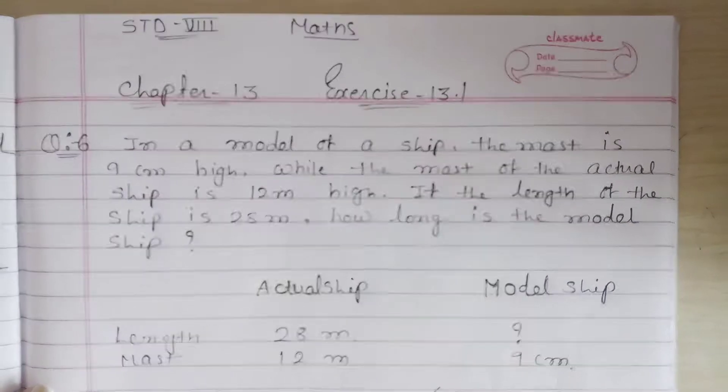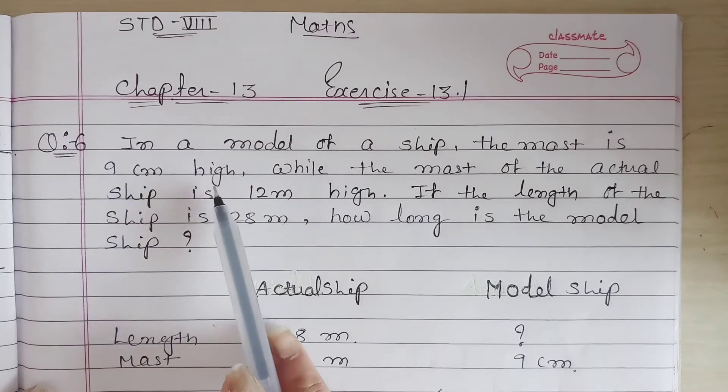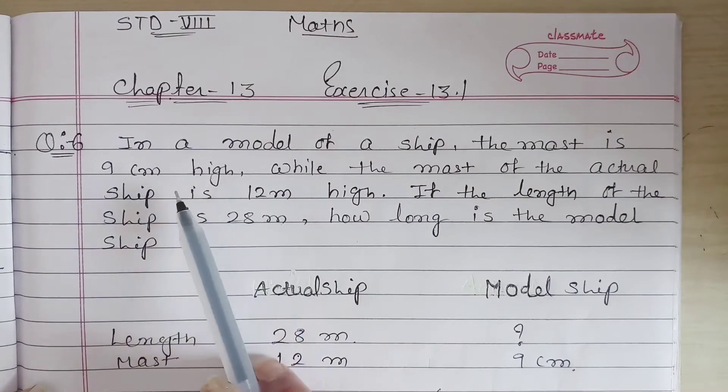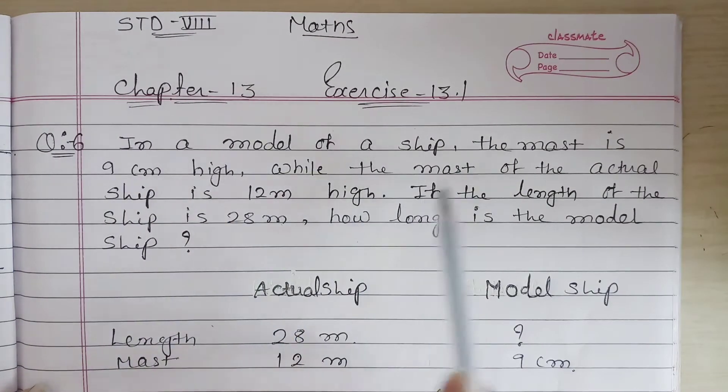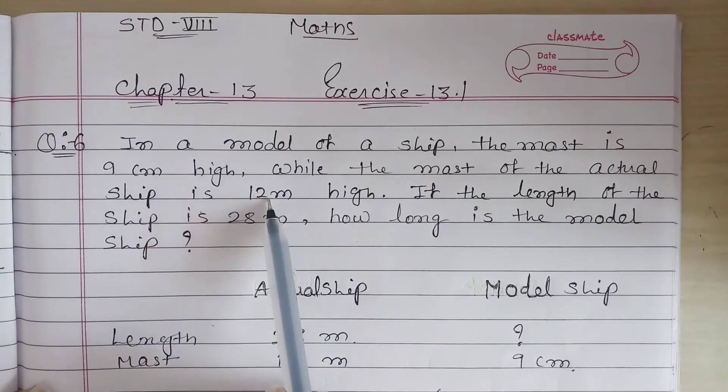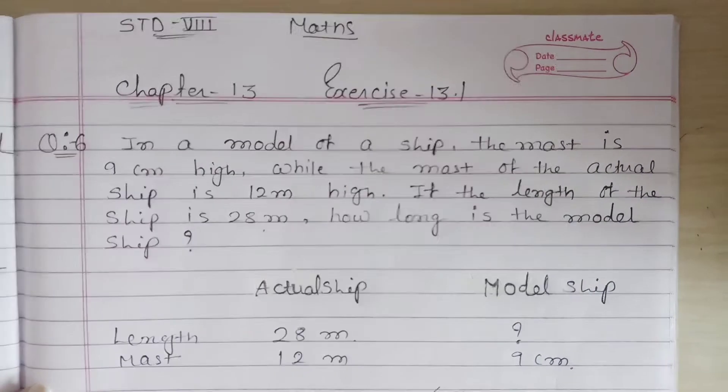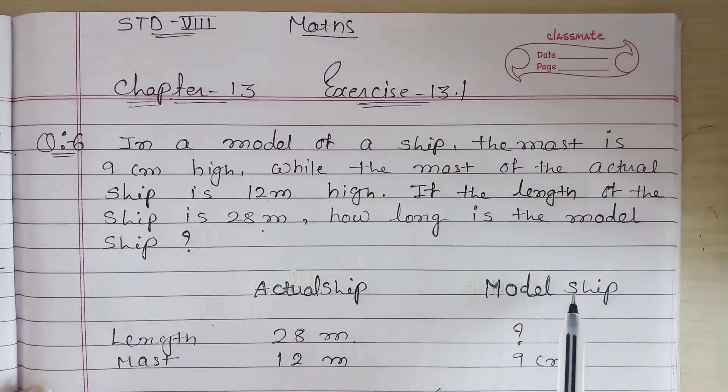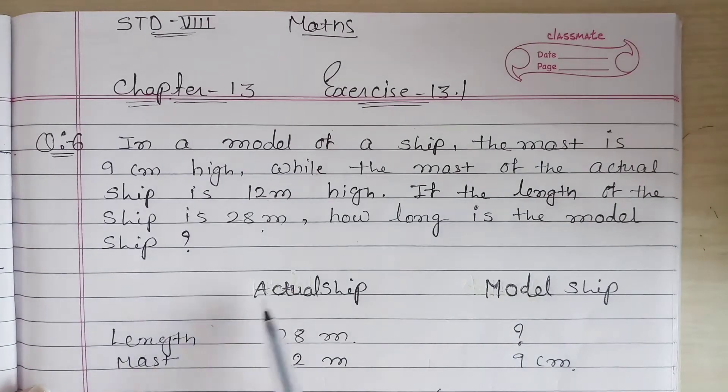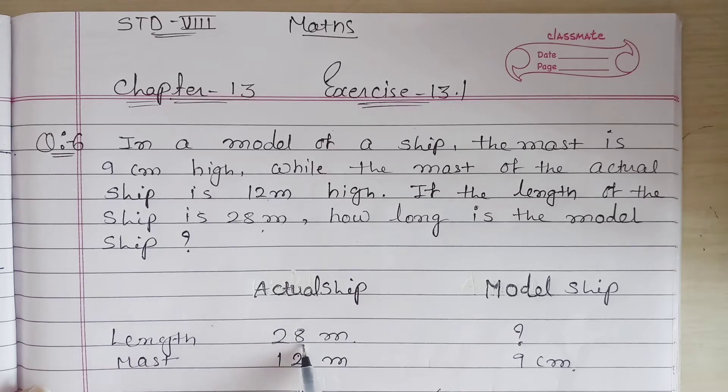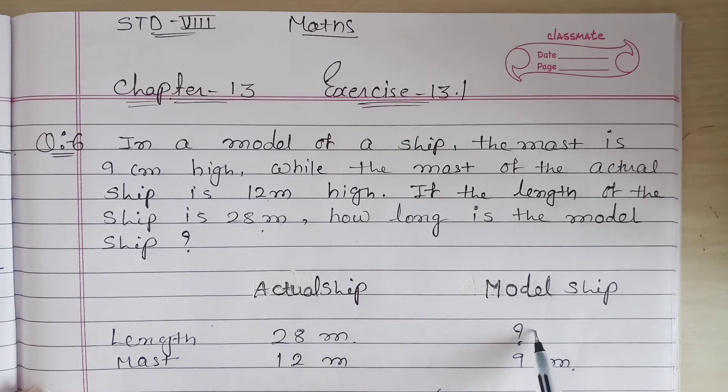The model ship kitna long hoga? Model ship ka mast given hai, 9 centimeter high, or actual ship ki mast bhi hai aur is ka length bhi hai. So kaise find karenge? Here I am writing actual ship and here is the model ship. Actual ship ki length kitna hai? 28 meter. And is ka mast hai 12 meter. So model ship ka agar mast 9 centimeter hai, toh is ka actual jo length hai woh kitna hoga?